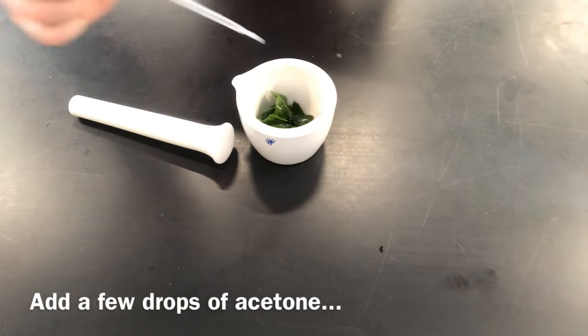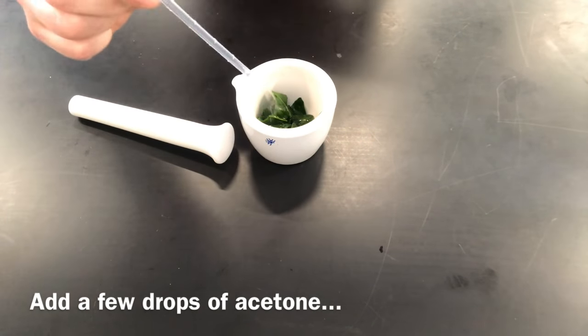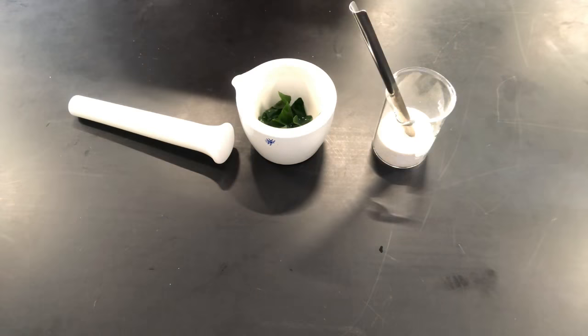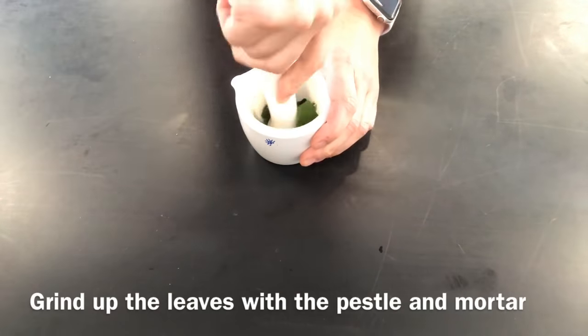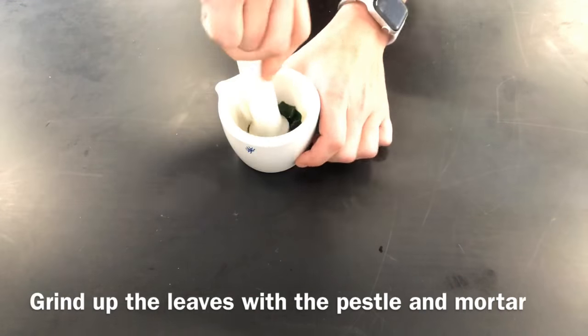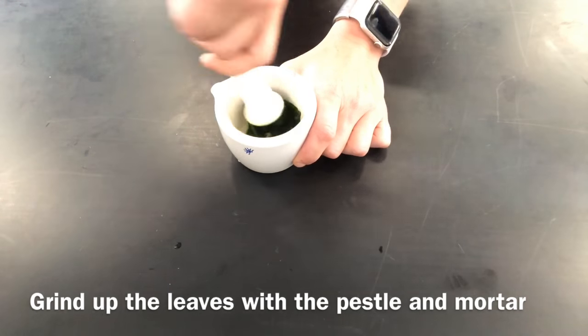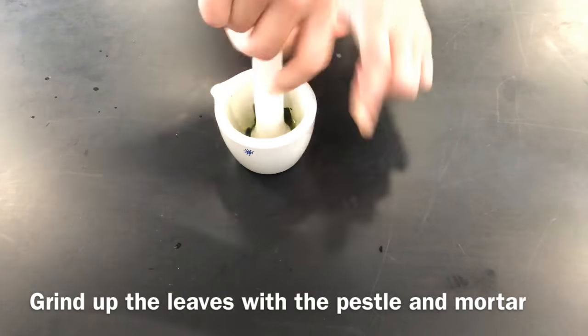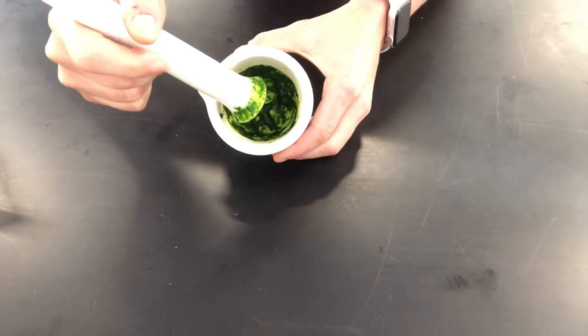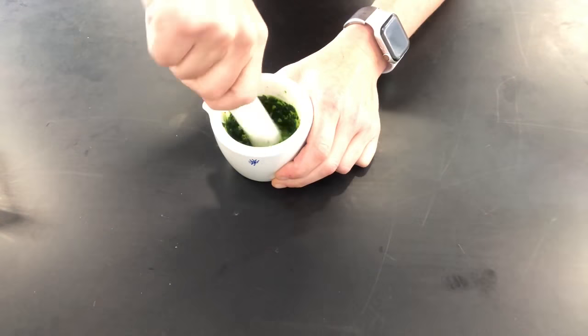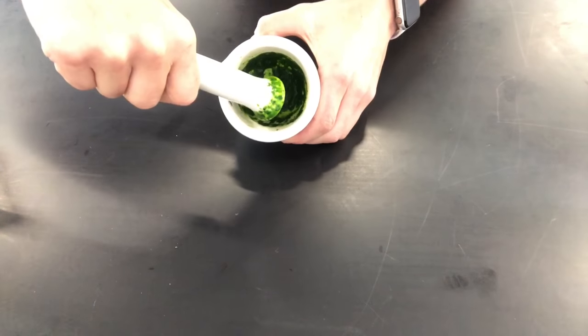Break up one of the leaves into little pieces and place it in a mortar. Add a few drops of acetone and a little bit of sand as this helps with grinding up the leaves. Use the pestle and mortar to grind up the leaves and to release the pigments. You can add a few more drops of acetone if it helps, but ultimately the objective is to obtain a concentrated pigment in a liquid at the bottom of the mortar.